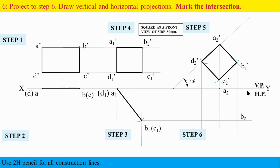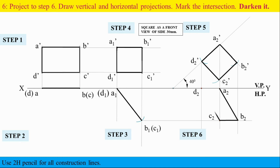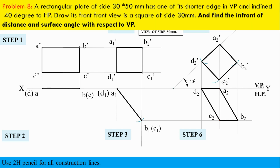B2 is here. C2 — this is C2. And then D2. Connect A2, B2, C2, D2. If the point is on the XY line, we will draw the profile. That is the size of the rectangle. Find the in-front-off distance and surface angle.